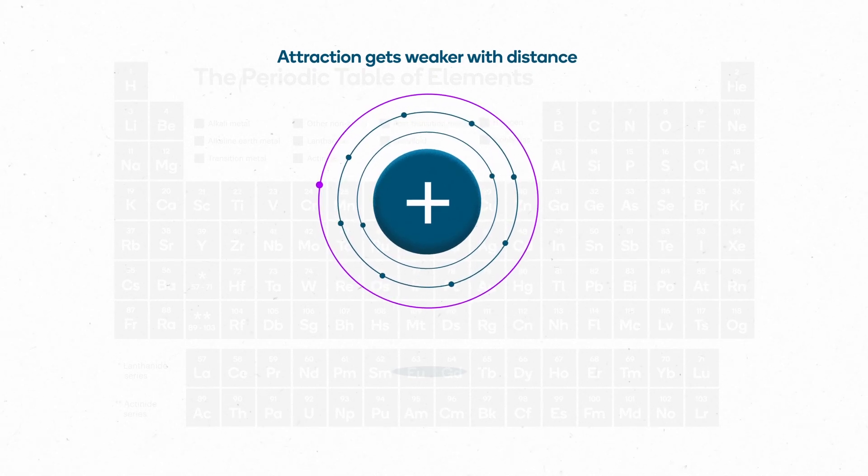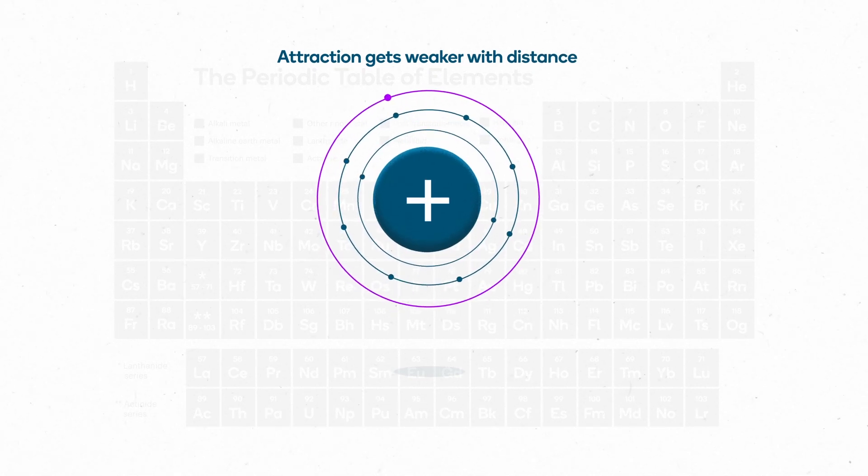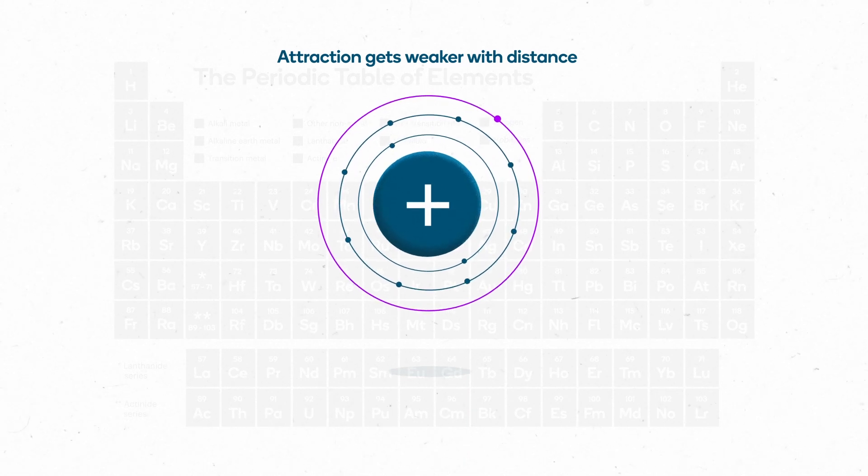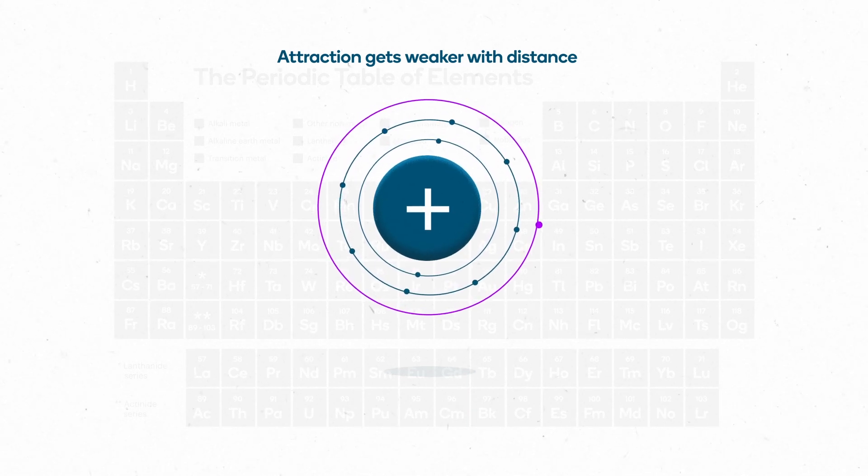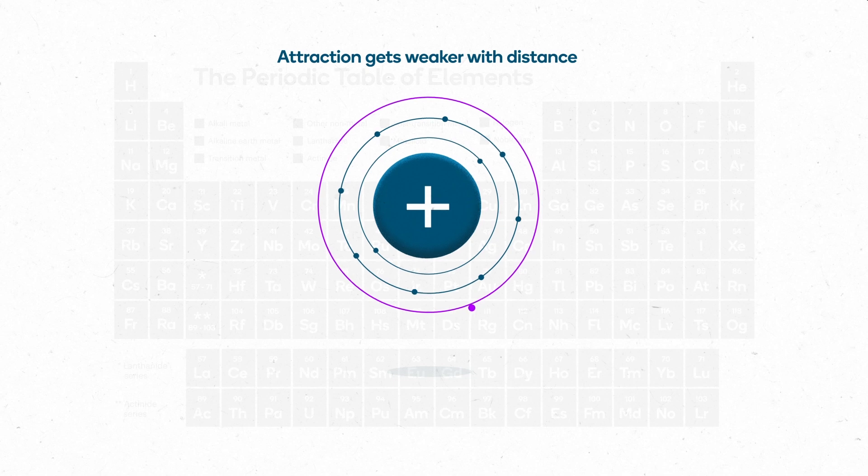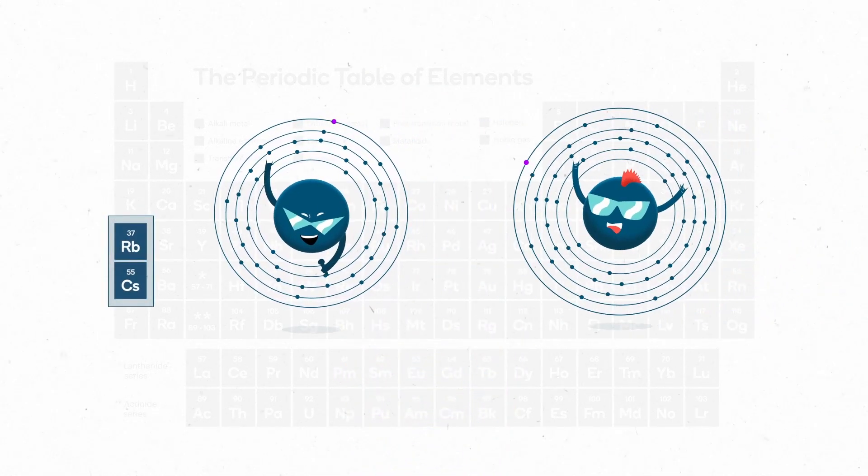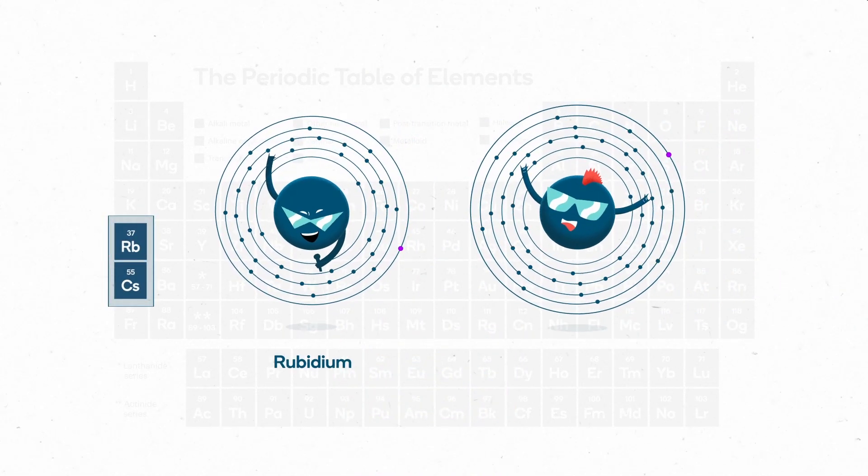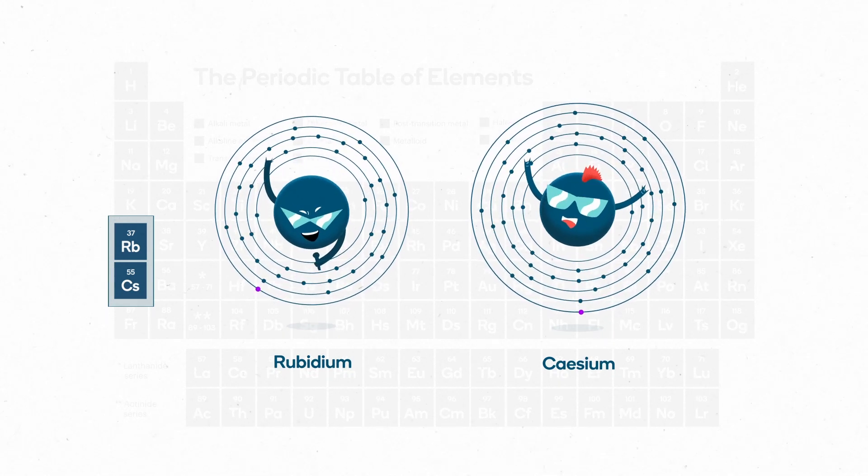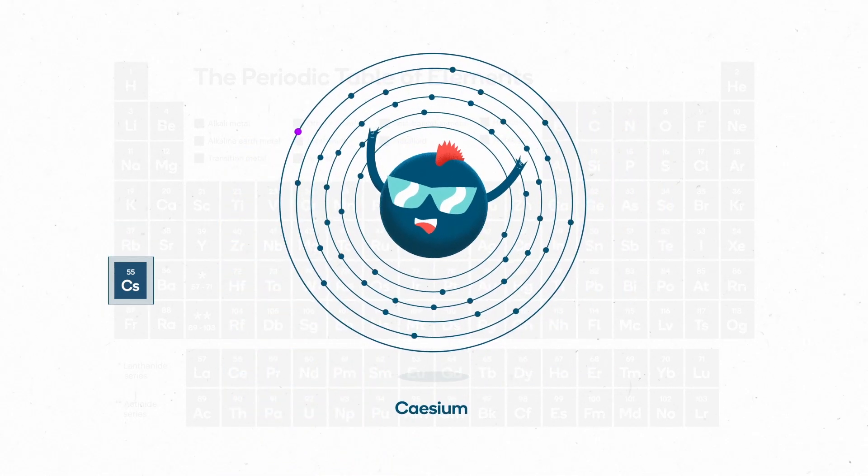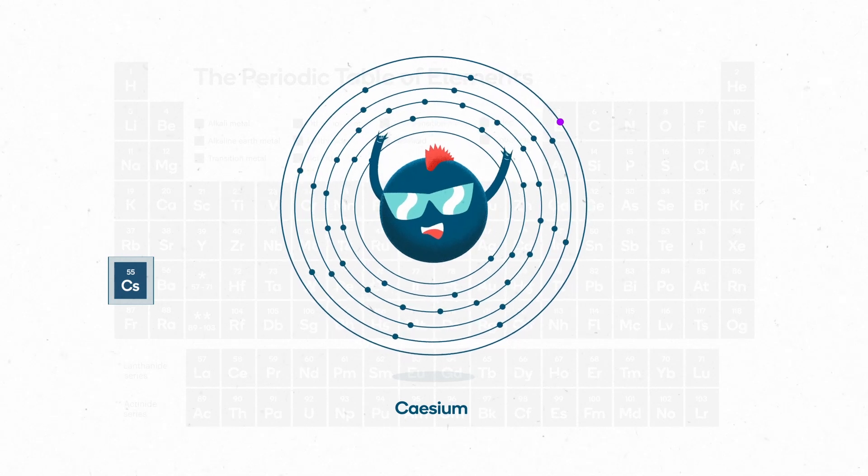So as atomic radius increases for the alkali metals, valence electrons are more easily lost to other atoms in a reaction. The really big alkaline metal atoms, like rubidium and cesium, lose their valence electrons most easily. The largest atom, cesium, is the most reactive of the whole group.